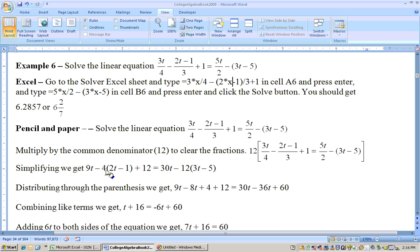Now, distribute through the parentheses, taking the minus 4 through. That would be minus 8t, and then plus 4. And take the minus 12 through here, making it minus 36t plus 60. Combining like terms, we would have t because 9t minus 8t is t, and 4 and 12 is 16 on this side. 30t minus 36t is minus 6t, and then plus 60.